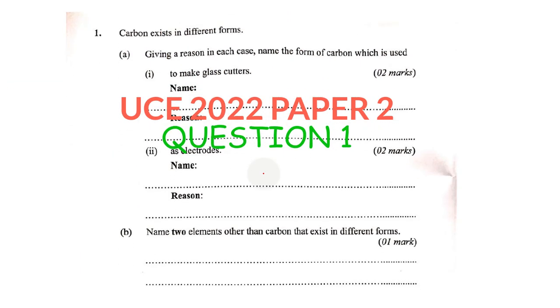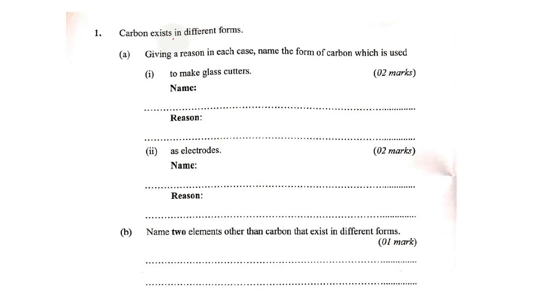Question one: Carbon exists in different forms. Giving a reason in each case, name the form of carbon which is used to make glass cutters. So different forms—what they're asking here is basically asking for the allotropes of carbon. Carbon has crystalline allotropes where we have diamond, graphite, and also amorphous forms of carbon.